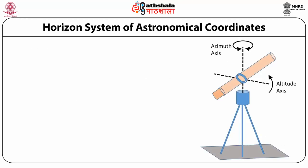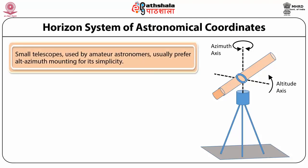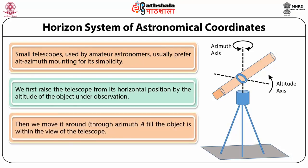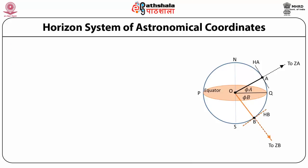We will see why the horizon coordinate system is important. The system of azimuth and altitude is important because small telescopes used by amateur astronomers usually prefer altitude-azimuth mounting for their simplicity. We first raise the telescope from its horizontal position by the altitude of the object under observation, and then move it through the azimuth A until the object is within the view of the telescope. However, there are drawbacks: the horizon for different observers is different, so the coordinates of a star for two observers at different locations will be different.